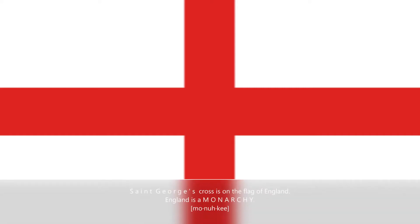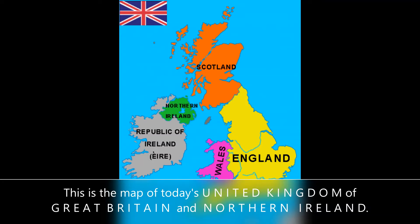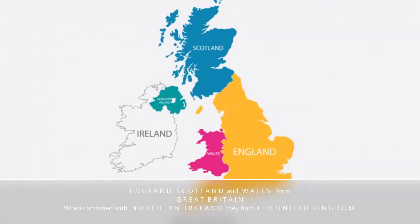Saint George's Cross is on the flag of England. England is a monarchy. This is the map of today's United Kingdom of Great Britain and Northern Ireland. England, Scotland and Wales form Great Britain; when combined with Northern Ireland they form the United Kingdom.